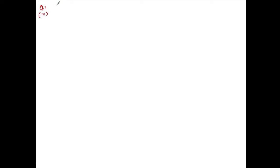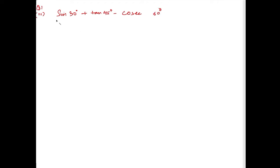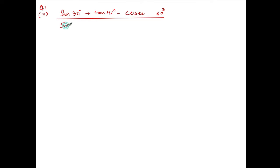We are doing exercise 10.1, question number 1, Roman number 3. The question is: sine of 30 degrees plus tan of 45 degrees minus cosec of 60 degrees, divided by sec of 30 degrees plus cos of 60 degrees plus cos of 45 degrees.